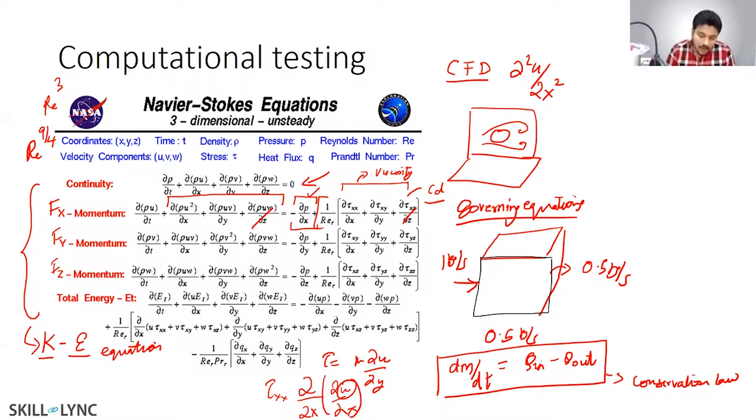We have something called the law of the wall which basically helps a turbulence model so that even with a larger cell you can run turbulent flow simulations. This is kind of an important point in CFD.